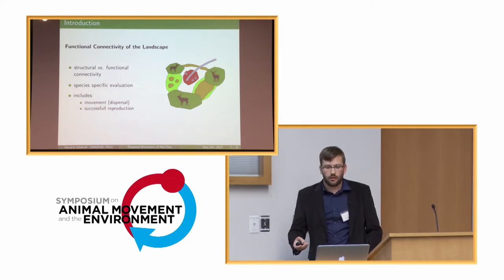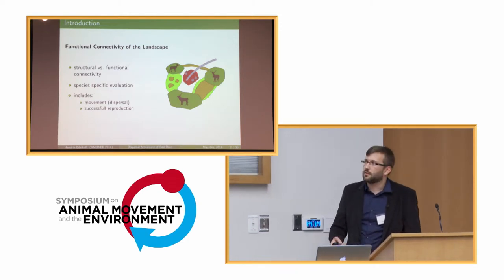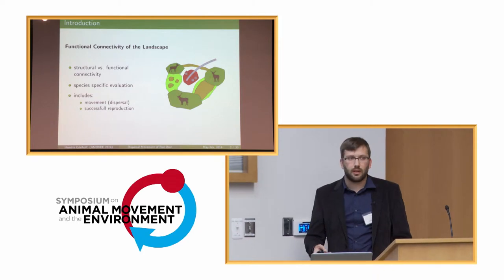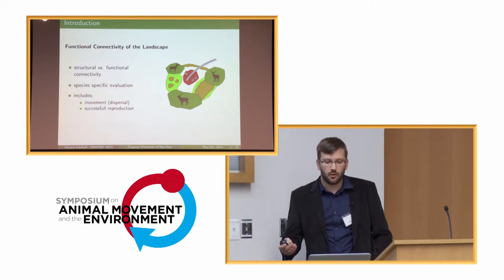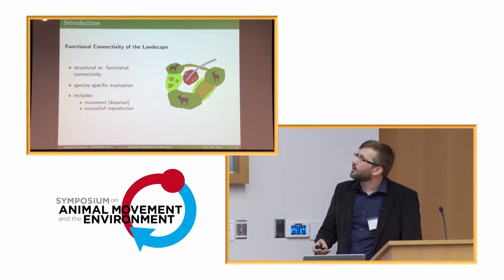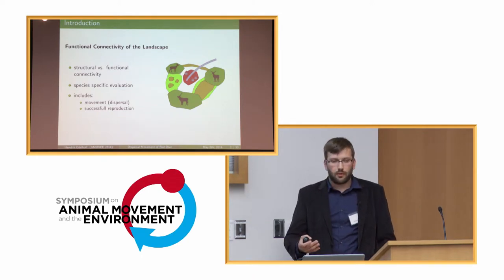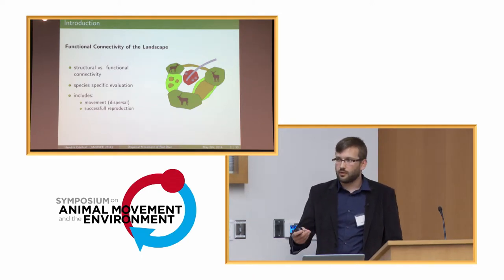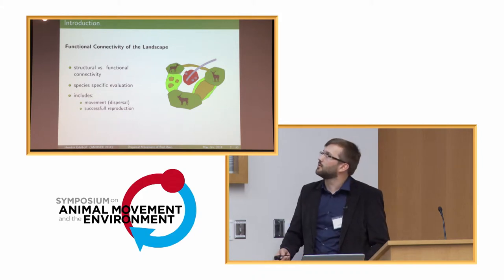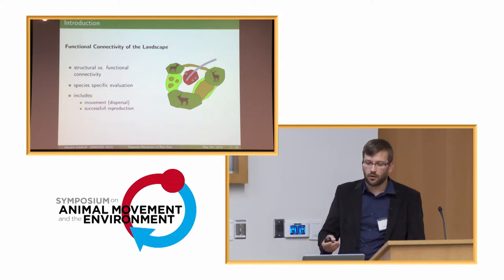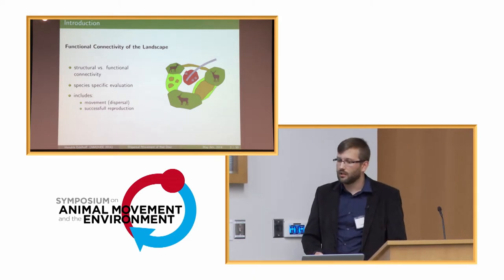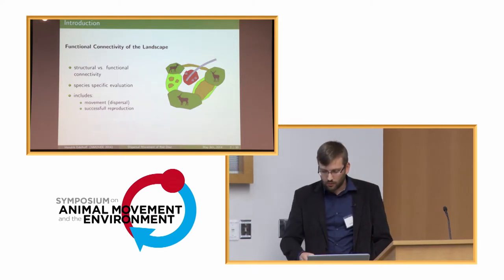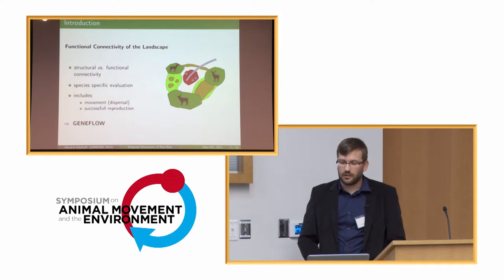This needs to be evaluated at a species-specific level, so one species might be able to cross the road while another might not. Functional connectivity includes the movement or dispersal of organisms from one point to another, but also the successful reproduction at a newly established habitat — so we can say it actually represents gene flow.